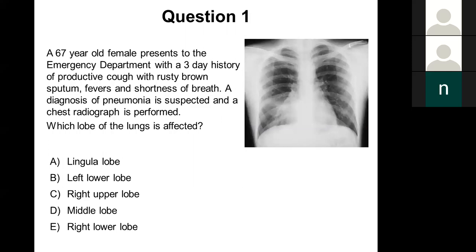Question one: a 67-year-old female presents to the emergency department with a three-day history of productive cough with rusty brown sputum, fevers and shortness of breath. A diagnosis of pneumonia is suspected and a chest radiograph is performed. Which lobe of the lungs is affected? Is it A the lingular lobe, B the left lower lobe, C the right upper lobe, D the middle lobe, or E the right lower lobe?